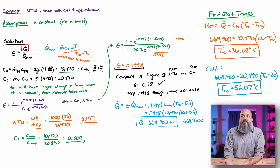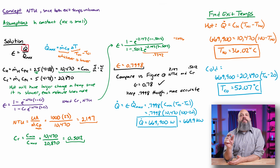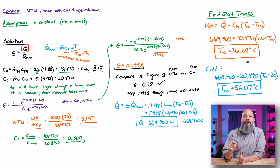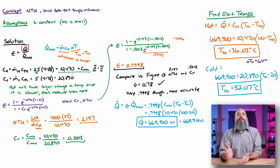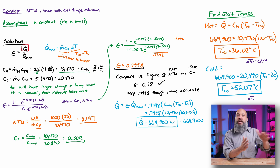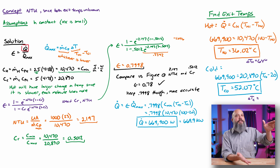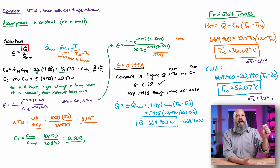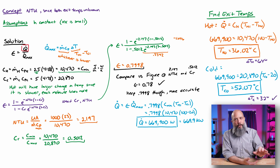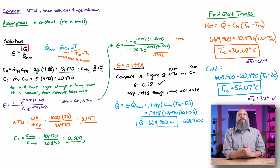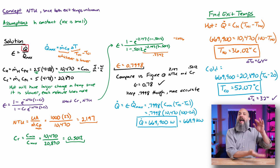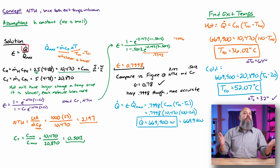A quick sanity check: delta_T_hot was 64 degrees and delta_T_cold was only 32 degrees. That checks out — we expected the hot temperature to change by about twice as much as the cold, because C_hot is half of C_cold. When C_cold is double, it takes double the energy to change the same temperature, so the hot fluid changes twice as much.